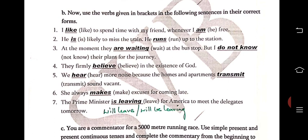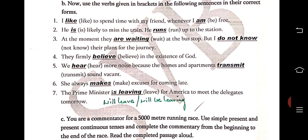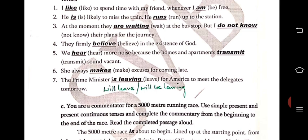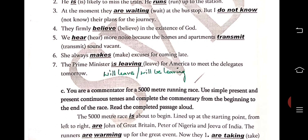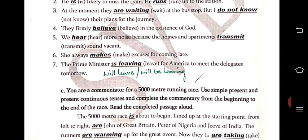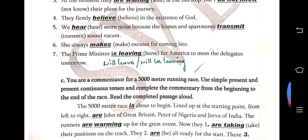At the moment, they are waiting at the bus stop. They firmly believe in the existence of God — present. We hear more noise because homes and apartments transmit sound — present. 'She always makes excuses for late coming' — this is habitual, so use simple present, not present continuous. Even though 'always' appears, here it describes a habitual action, so habitual is only related to simple present, not present continuous.